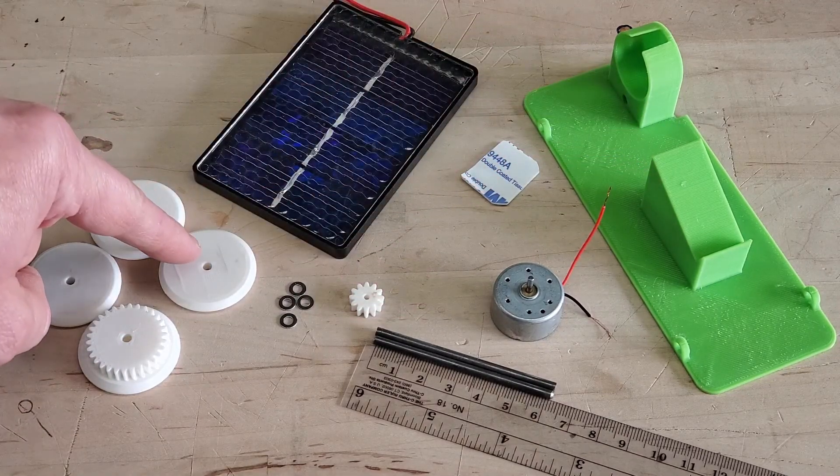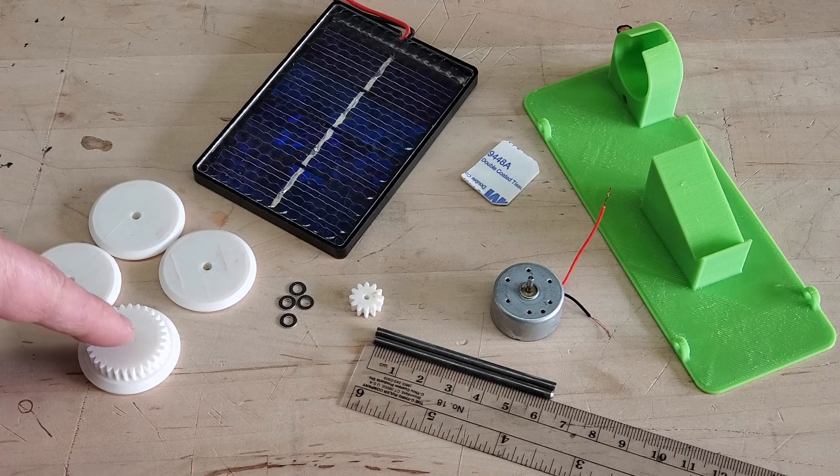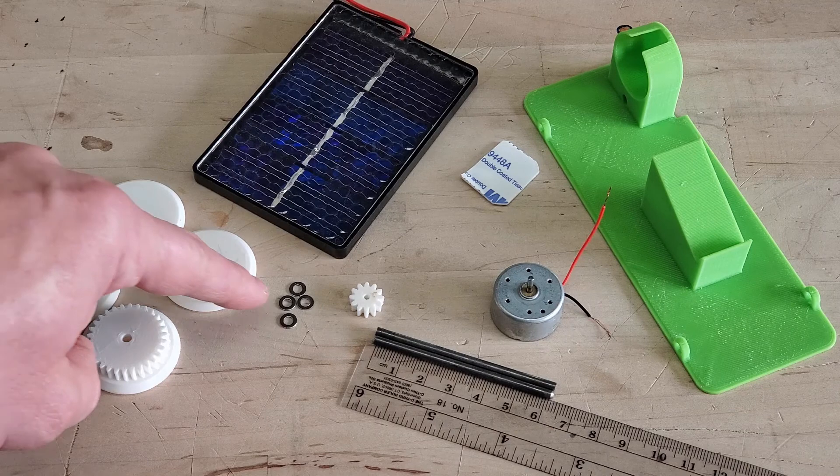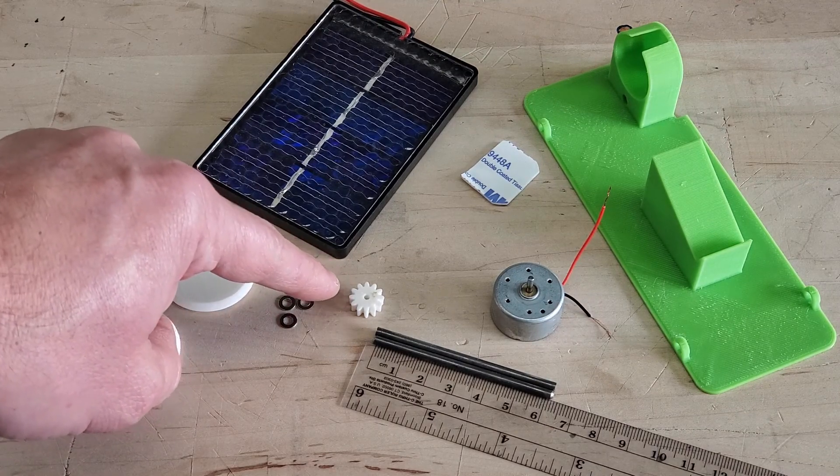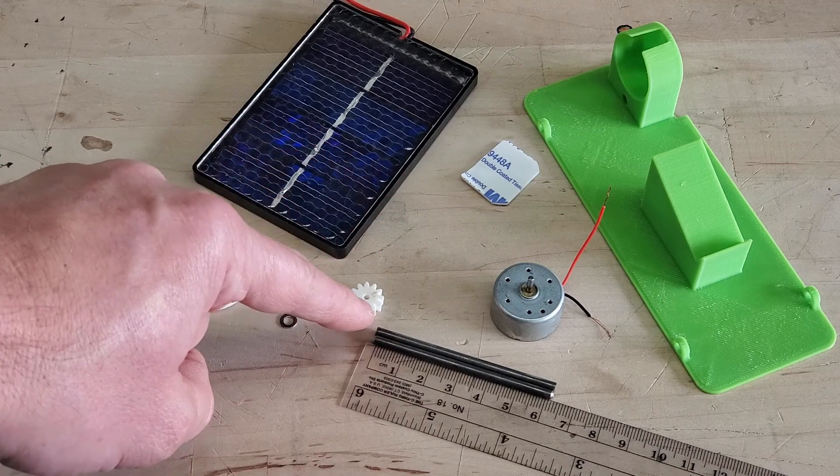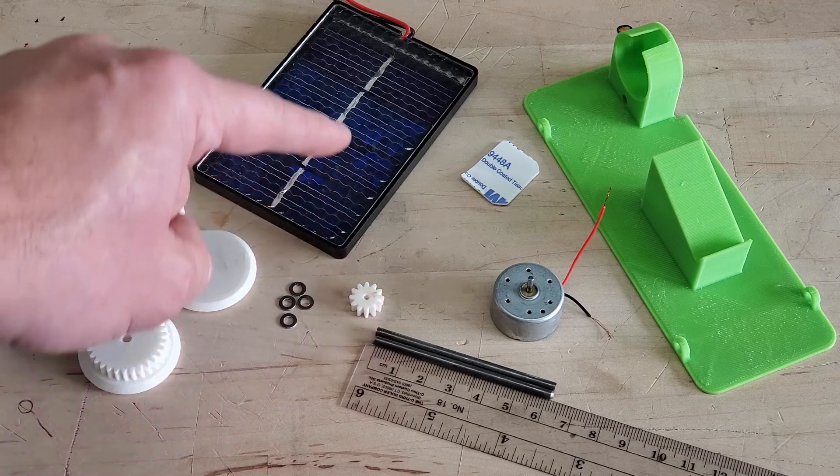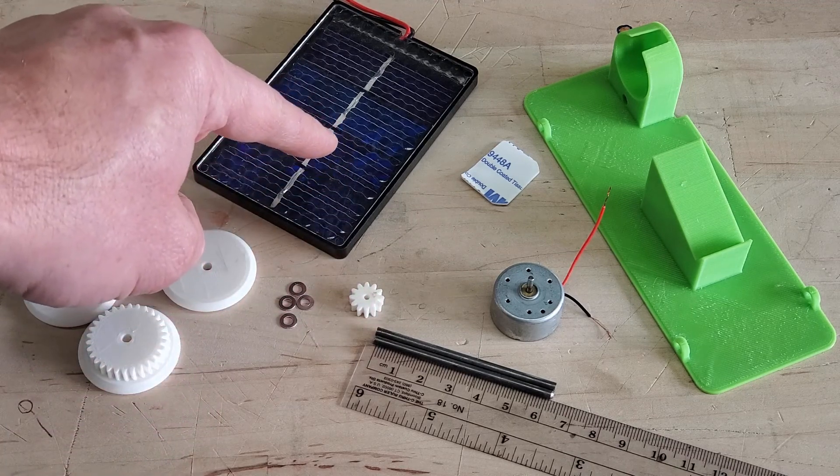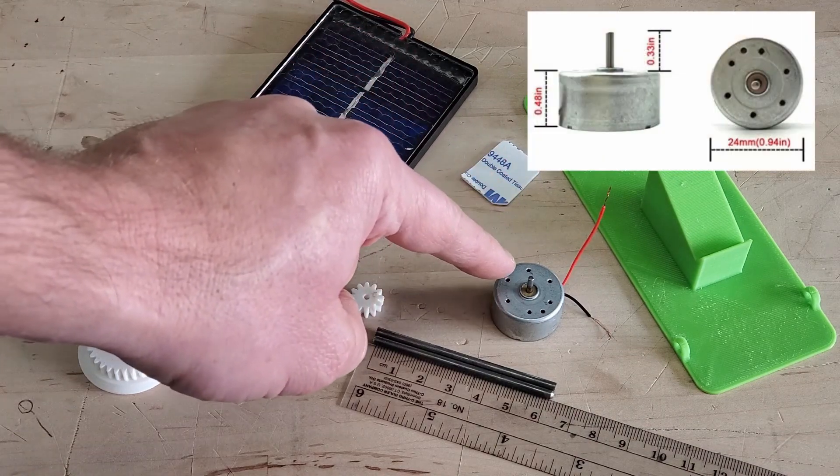3D printed solar car wheels, one 3D printed large gear attached to the wheel, and optionally four M3 washers. One 3D printed small gear to attach to your motor, two axles roughly 3 millimeters in diameter, one 2.5-3 volt solar panel, some double-sided tape, and one 3 volt motor with the following dimensions.